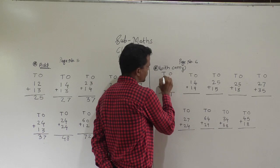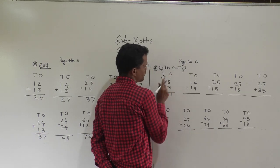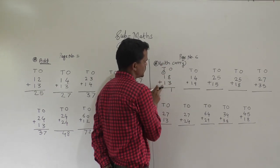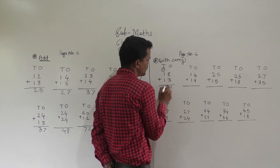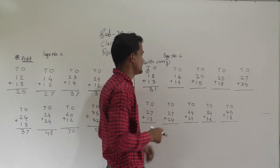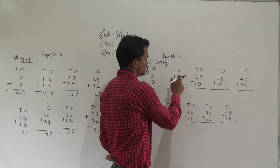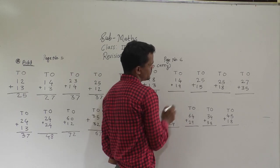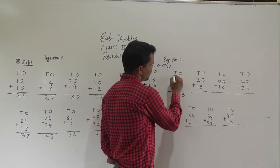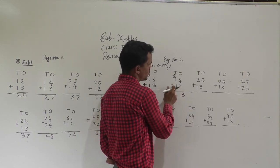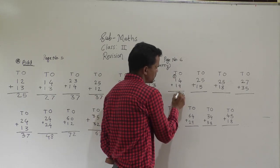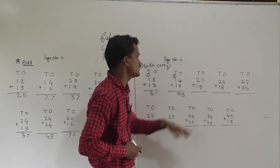Write 1 here and carry 1 to the tens place, then add the tens column: 1 plus 1 is 2, plus 1 carry is 3. So 31 is the answer. Next: 14 plus 19. 4 plus 9 is 13 — write 3 here and carry 1. Then 1 plus 1 is 2, plus 1 carry is 3. So 33 is the answer.